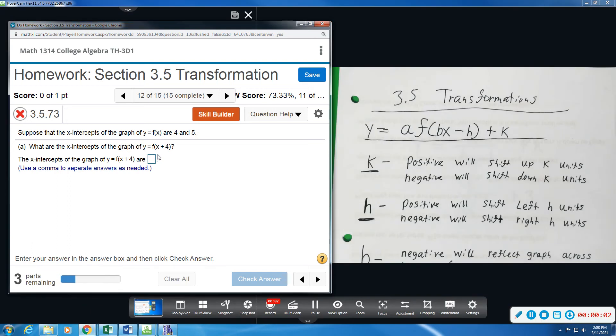All right, number 12 says, suppose we have the x-intercepts of the graph y equals f of x and they are 4 and 5.